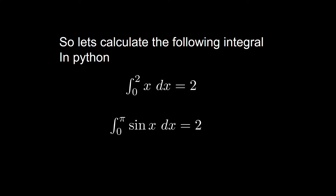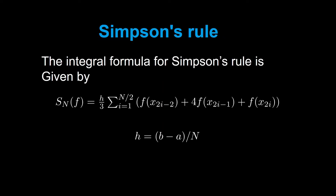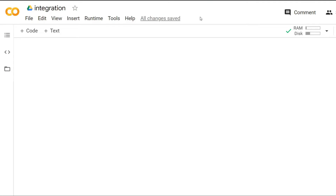We are going to calculate the following integrals in Python: one is x dx and one is sine(x) from 0 to pi dx. In both cases the integral value is 2. We are going to compute this in Python using the trapezoidal rule and the Simpson one-third rule. The integral formula for Simpson's rule is given by a quantity where h is the spacing between two data points and n is the total number of data points.